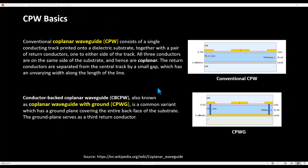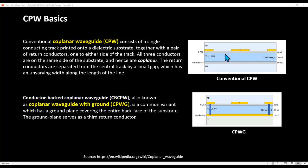Let's talk about some very basic CPW concepts, which I'm sure you're already aware of, but it's always good to revise key fundamentals. In a conventional CPW line, you have one central conductor printed on one side of the dielectric and a pair of ground conductors, one on either side. With these three conductors on the same side, the term is coplanar — that's why we refer to it as a coplanar waveguide line.